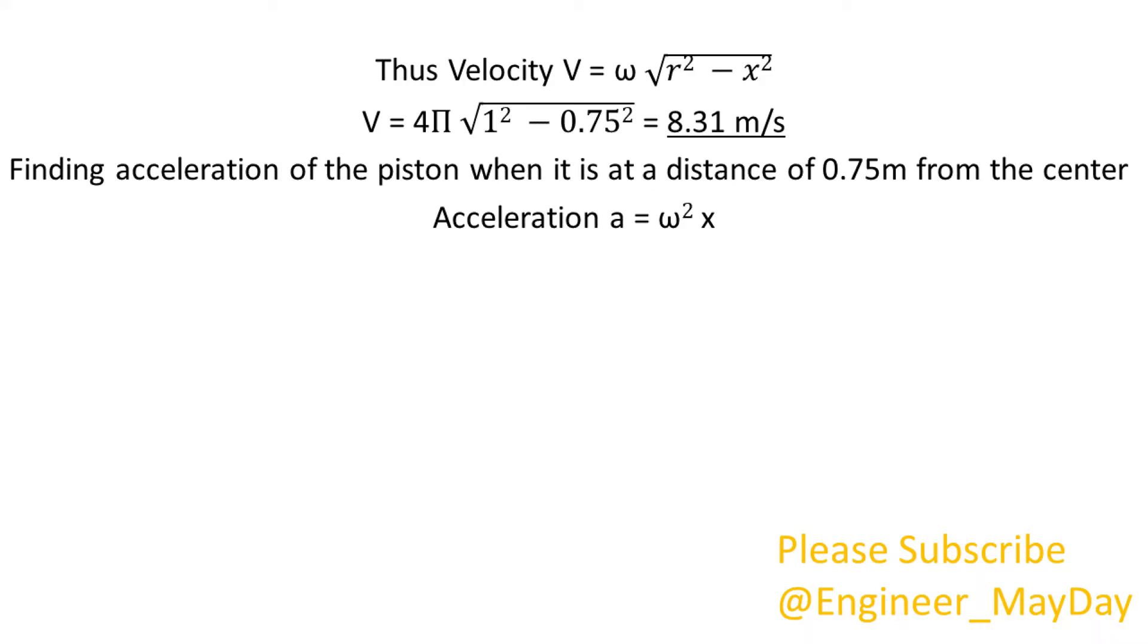Finding acceleration of the piston when it is at a distance of 0.75 meters from the center. Acceleration is equal to omega squared multiplied by x. Thus acceleration is equal to 118.44 meters per second squared.